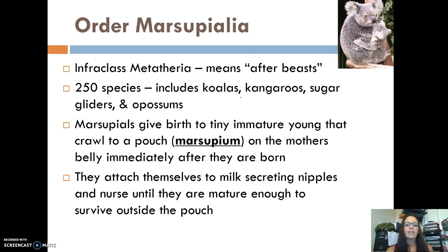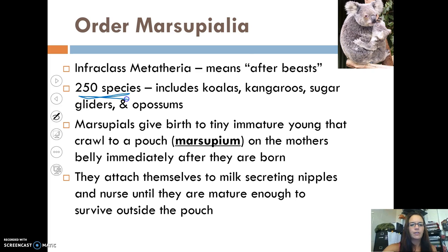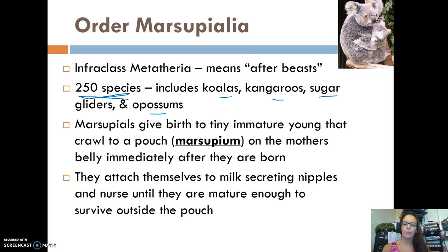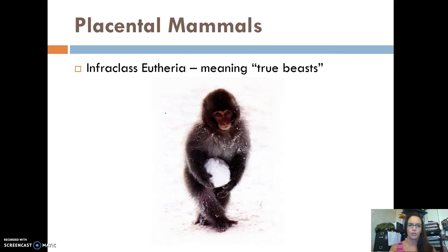Order Marsupialia — infraclass Metatheria, meaning 'afterbeasts' — is what you think of when you think of a pouch. There are 250 species, including koalas, kangaroos, sugar gliders, and possums. They give birth to live young, but the young crawl to a pouch called the marsupium on the mother's belly immediately after birth, attach to a nipple, and nurse there until they are mature enough to live outside the pouch.